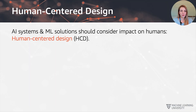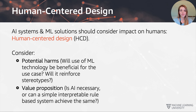One key principle that we want to adhere to when it comes to model formulation is what is called human-centred design, which states that AI systems and machine learning solutions should consider the impact they have on humans. We want to be aware of any potential harms — will the use of machine learning technology be beneficial for the use case, might it reinforce existing stereotypes or amplify bias? And also, what is the value proposition: is machine learning really necessary, or can a simple interpretable rule-based system achieve the same result?